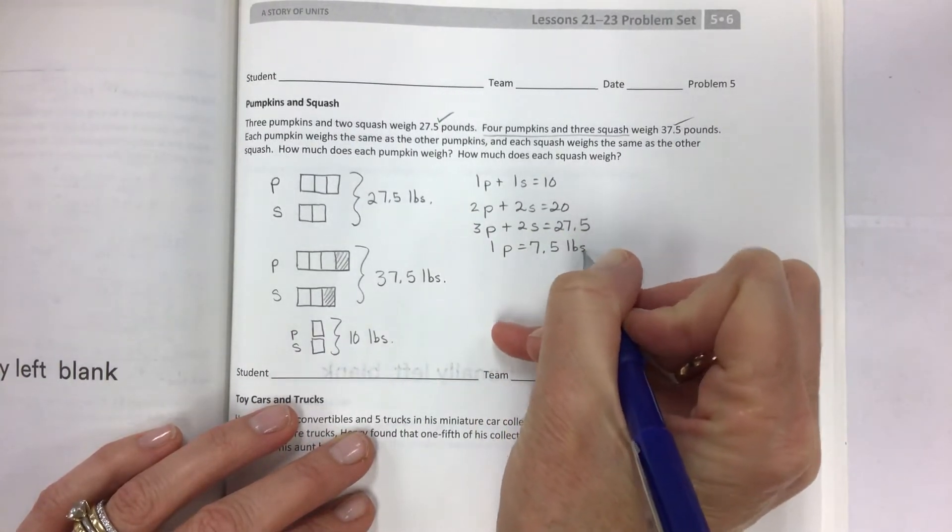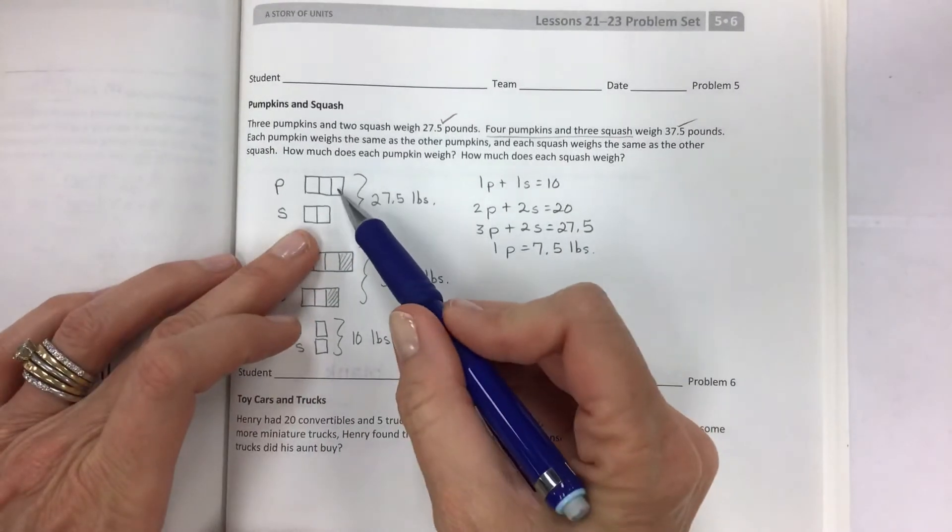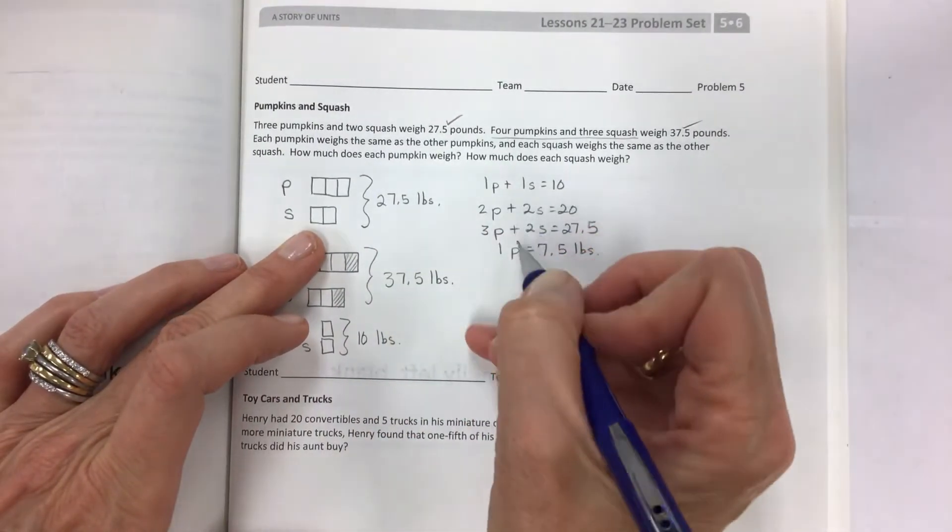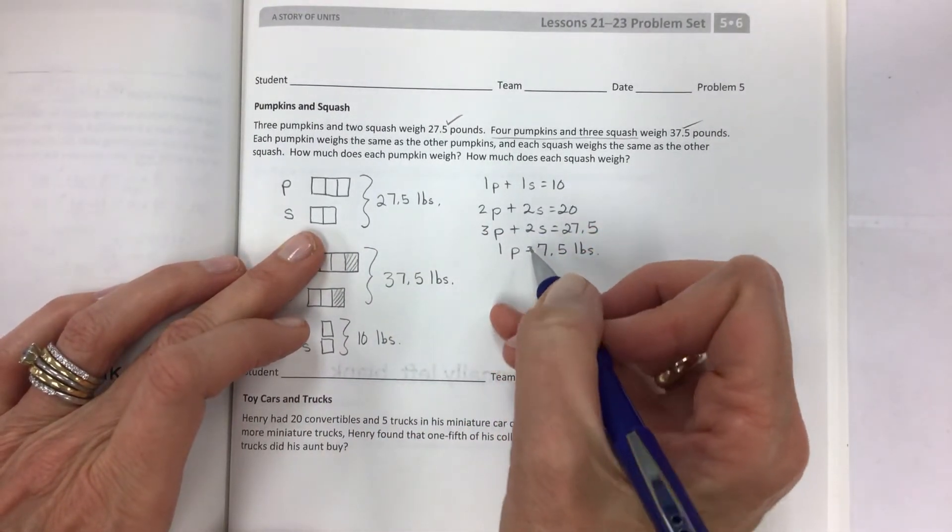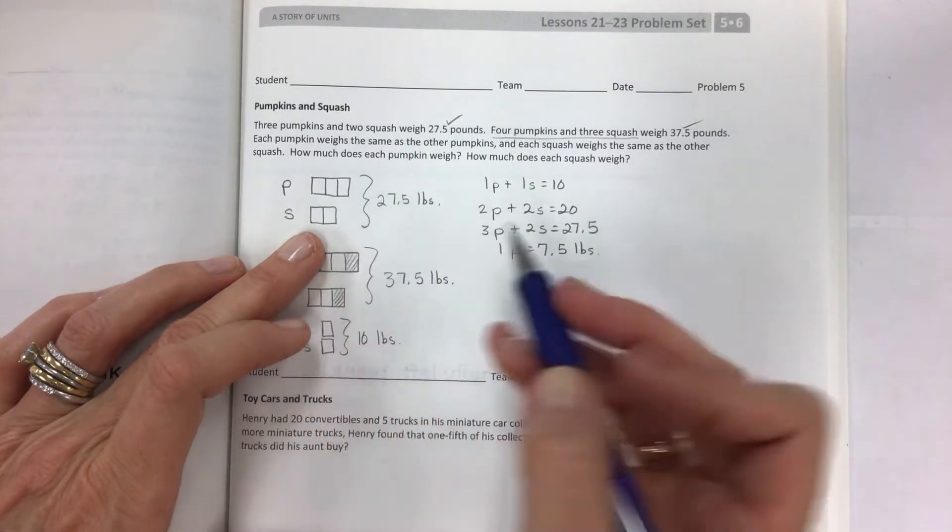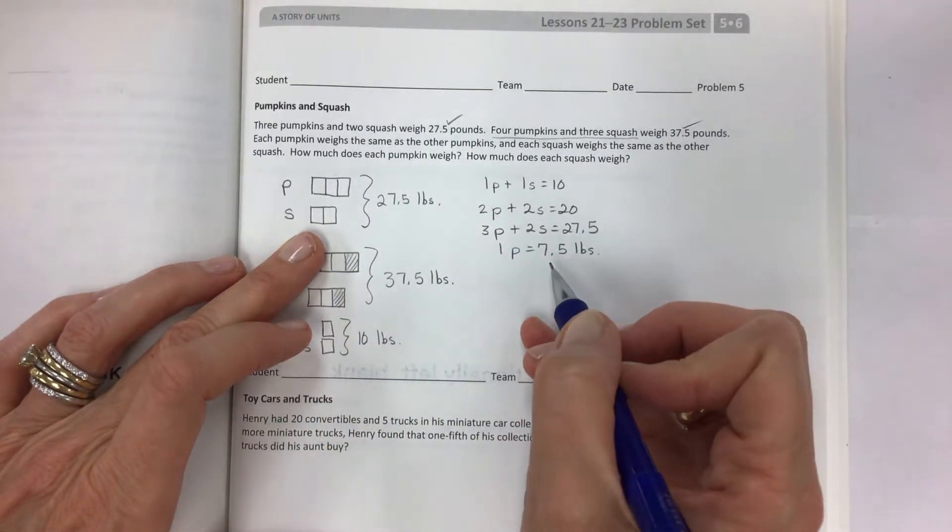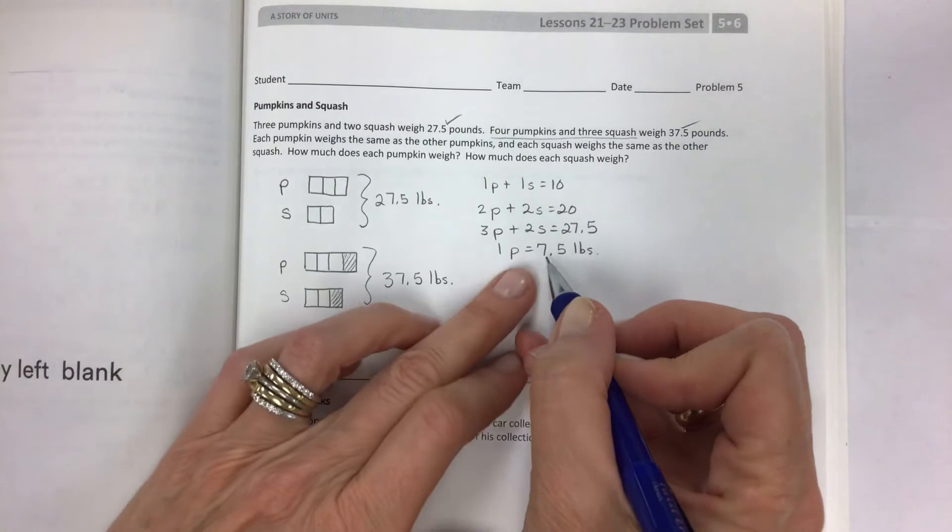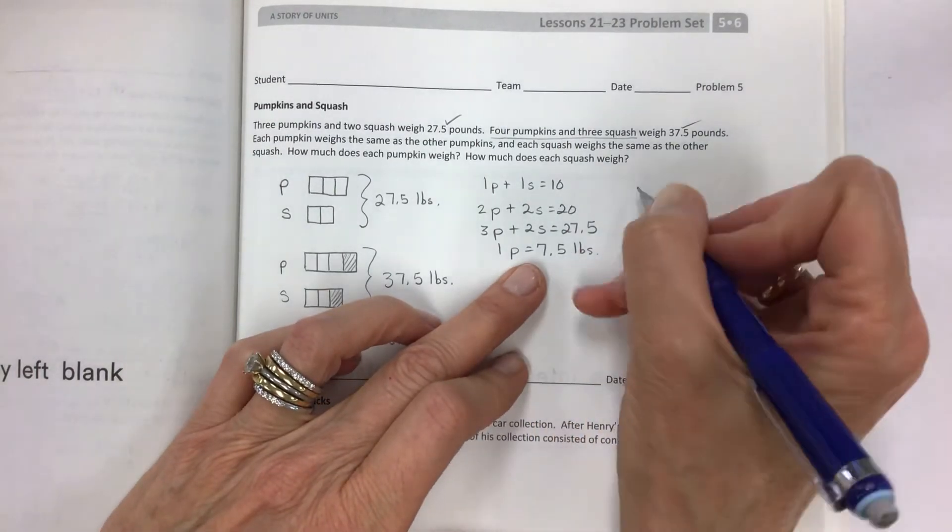Three pumpkins and two squash are 27.5 pounds. So the difference here is that this extra pumpkin is the 7.5 pounds. And that's what a picture can do for you, just trying to talk through and make sense of what each piece means.